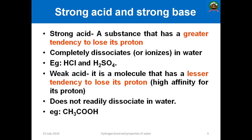Acids and bases are classified into two groups: strong acid and strong base, and weak acid and weak base. A strong acid is a substance that has a greater tendency to donate its proton (H plus) — it completely dissociates or ionizes in water. Examples include hydrochloric acid (HCl → H plus + Cl minus) and sulfuric acid (H2SO4 → 2H plus + SO4 2 minus). These have a high tendency to release the proton.